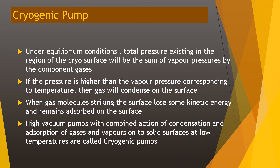Under equilibrium conditions, the total pressure in the region of the cryo surface is the sum of vapor pressures of the component gases. If the pressure is higher than the vapor pressure corresponding to the temperature, the gas will condense on the surface. When gas molecules strike the surface, they lose kinetic energy and remain absorbed. High vacuum pumps using the combined action of condensation and absorption of gases — the vapors onto solid surfaces at low temperatures — are called cryogenic pumps.